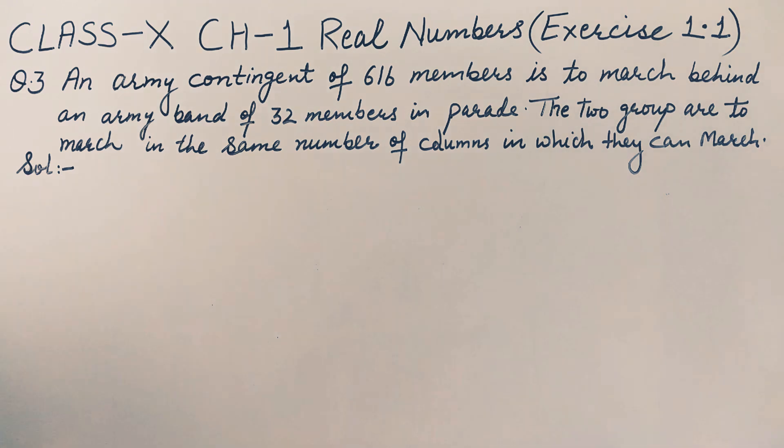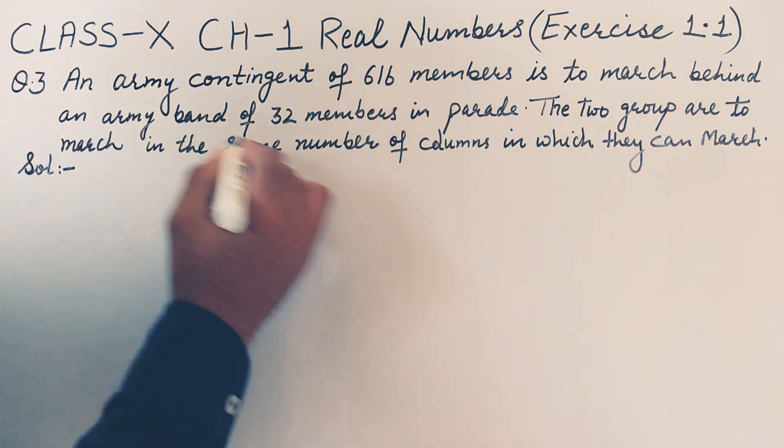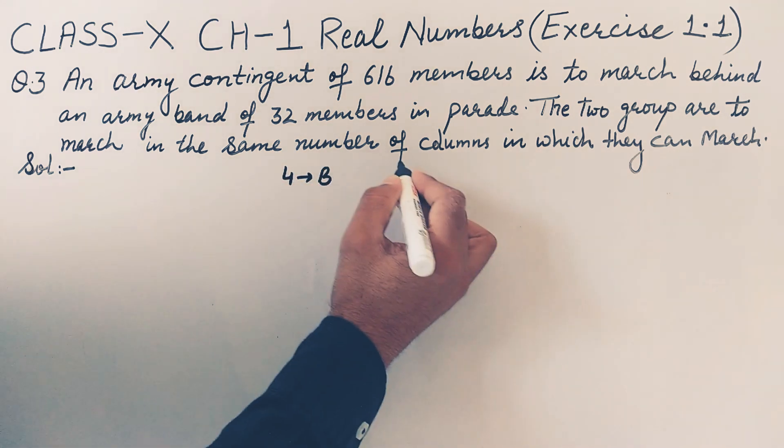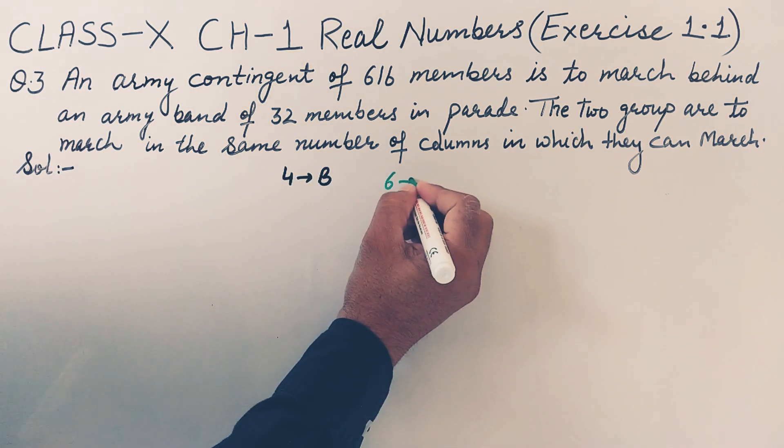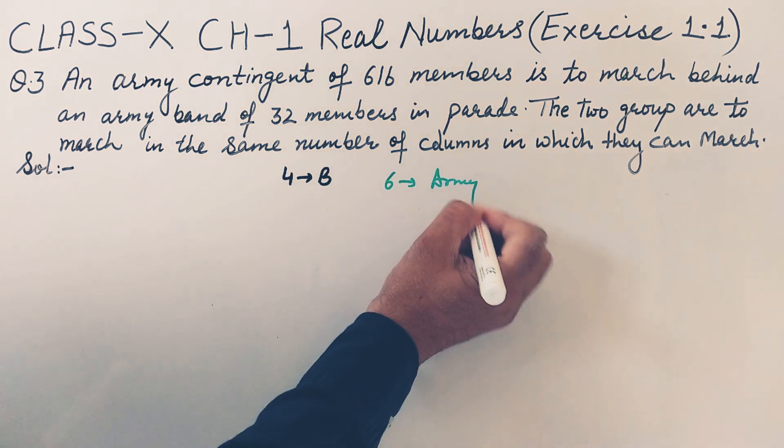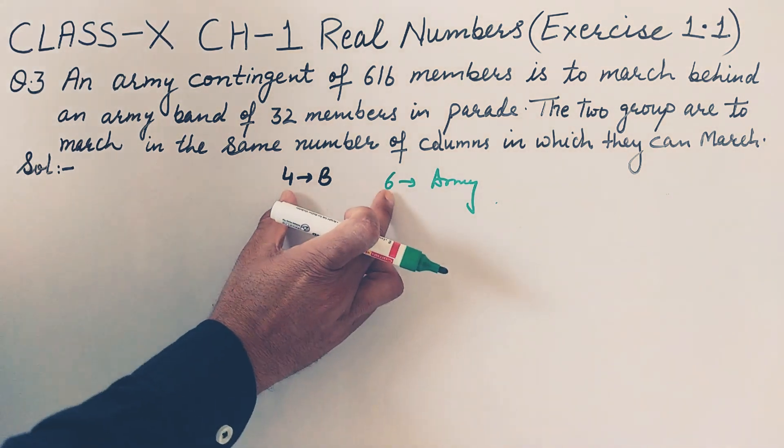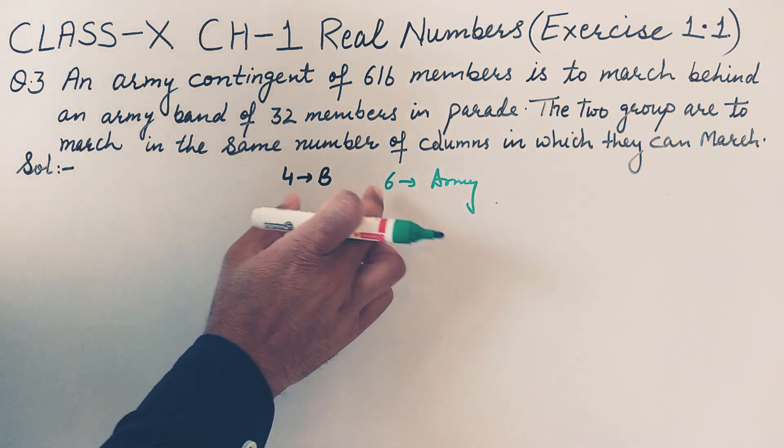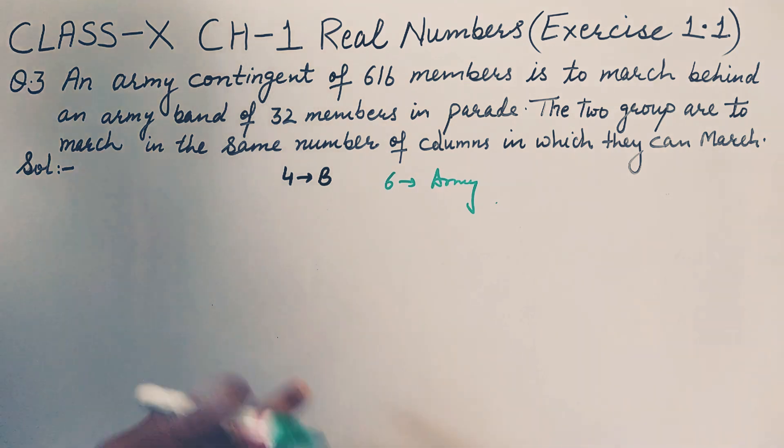For understanding this question, let's take a simple example. Suppose I have 4 members of band and 6 members of that army contingent. We have to set them in such a way that 4 members in front and then 6 members behind.